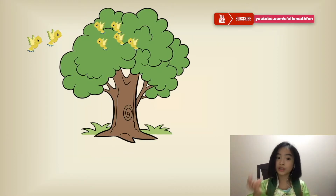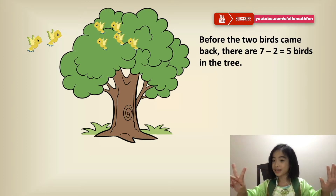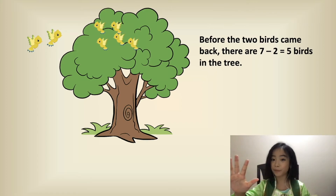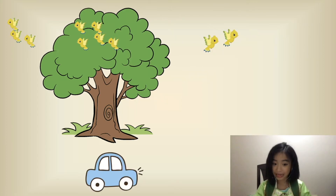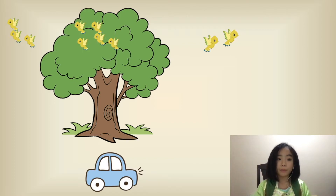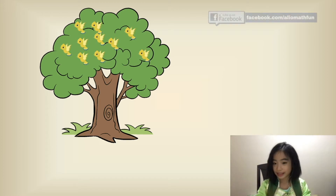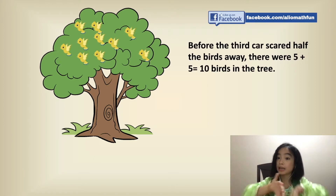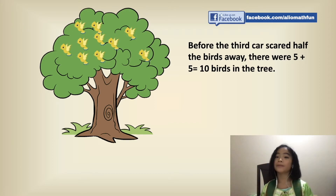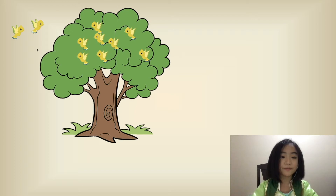This is what it looked like before the two birds came back. So before the two birds came back, there are seven minus two equals five birds in the tree. This is what it looked like when the third car passed by. So half of the birds flew away and five of the birds are in the tree, so five flew away. So before the third car drove by, there were five plus five equals ten birds in the tree.